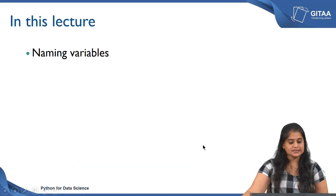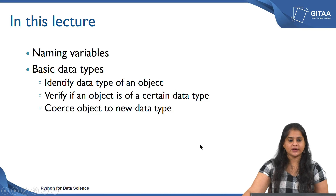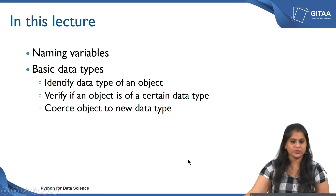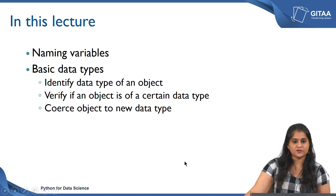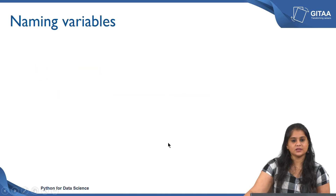Welcome to the lecture on Variables and Data Types. In this lecture we are going to look at how to name variables, some of the common rules and conventions in naming a variable. We are also going to look at some of the basic data types used throughout this course and in Python, including how to identify a data type of an object, how to verify if an object is of a certain data type, and how to coerce objects to a new data type. Let us begin with naming variables.